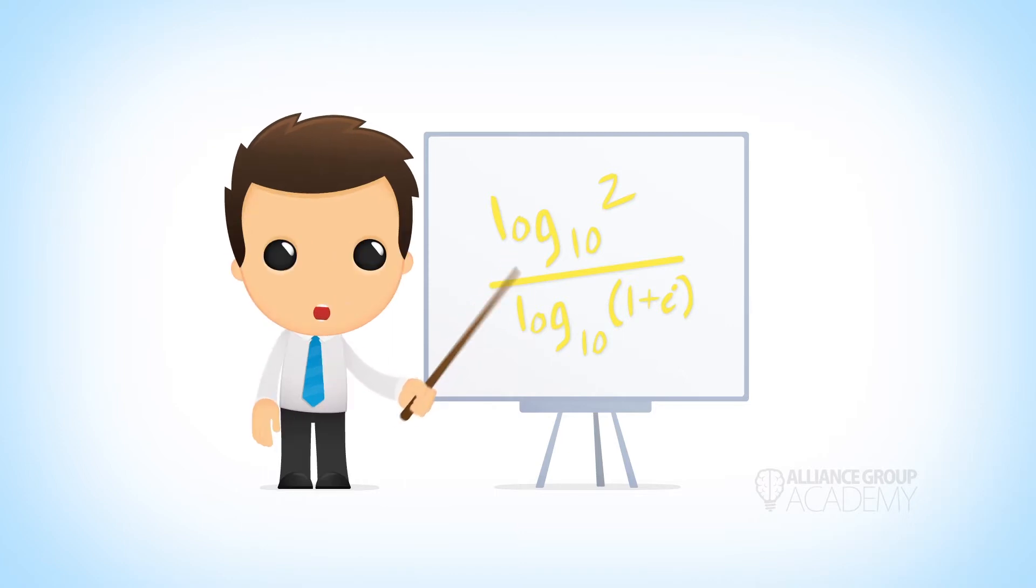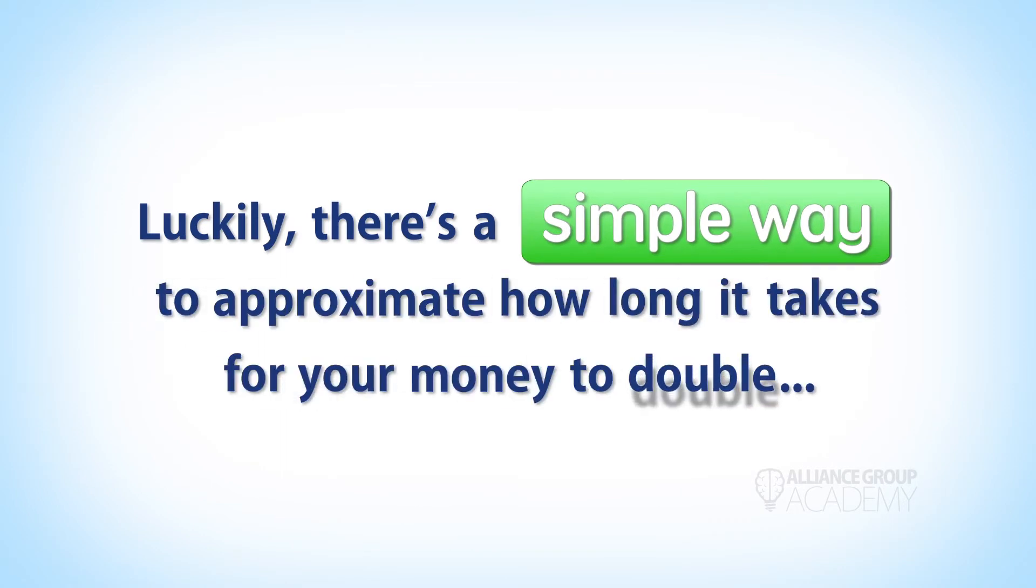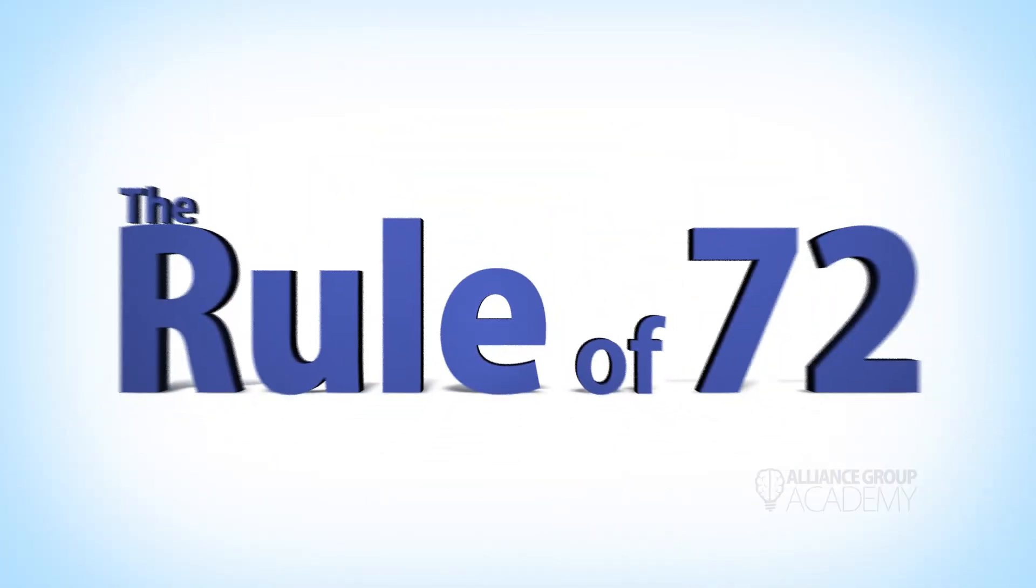Luckily there's a simple way to approximate how long it takes for your money to double in a compound interest account. It's called the Rule of 72. How does it work?